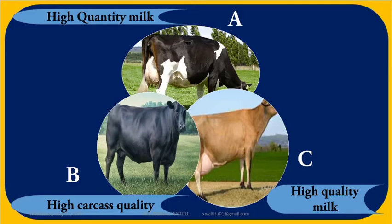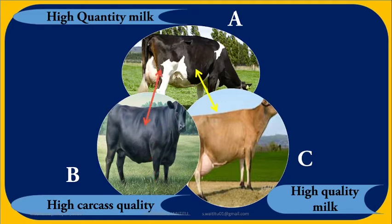On the screen are three breeds of cattle. Breed A is African, breed B is an Aberdeen Angus, and breed C is a Jersey. Breed A is the highest producer of milk. Breed B has the highest quality carcass, and breed C has milk with the highest butterfat content. An animal breeder will select any two of those animals and cross them based on the traits of interest. For example, if interested in high quality and quantity milk, he will cross breed A and breed C. If interested in high quantity milk and high quality meat, he will cross breed A and breed B.